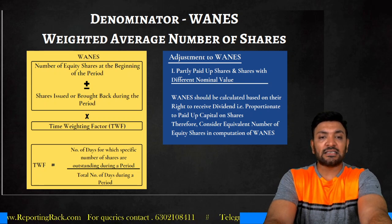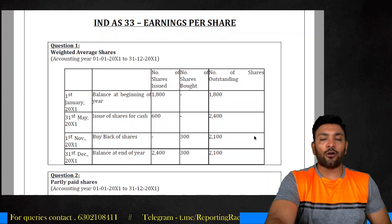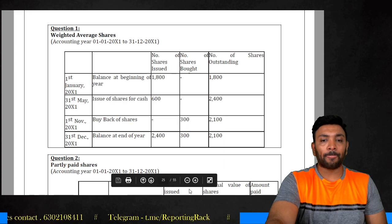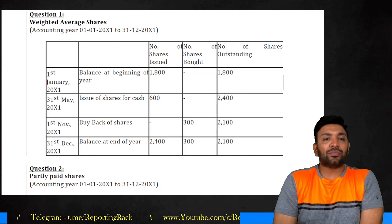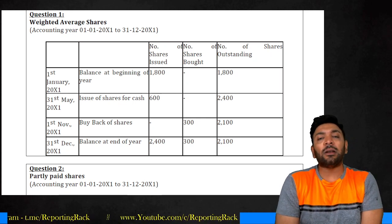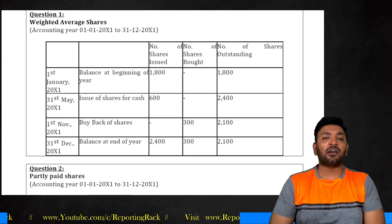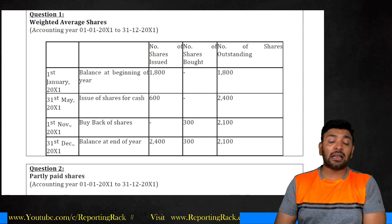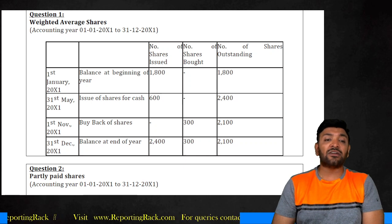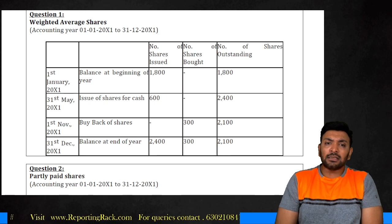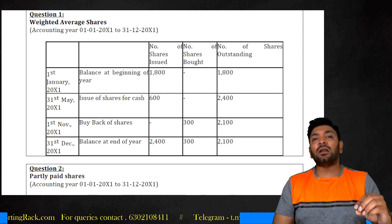Let's apply this with an illustration from Ind AS 33. Balance at the beginning of the period: 1,800 shares. On 31st May, 600 shares issued for cash. On 1st November, 300 shares bought back. At 31st December (end of year), the balance is 2,100 shares. We need to calculate the weighted average number of equity shares. I will calculate this in two ways.